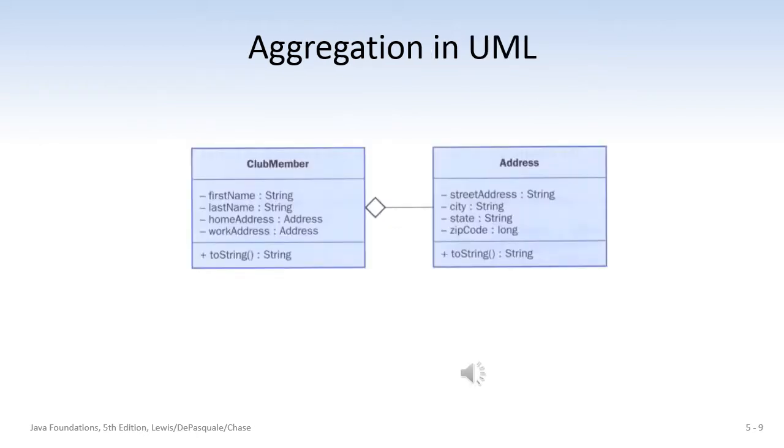So here we have an example of an object of the club member class. And that club member is going to have some instance data that is a string for first name, last name is a string. And then it's going to have a home address and a work address, but those are address objects, objects of the address class. And so the address class has instance data, street address is a string, city is a string, state is a string, zip code is a long integer, and it also has a method toString. So the instance data of a club member object includes objects of the address class.